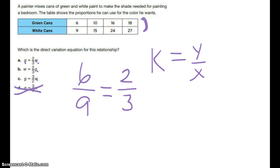So now, I have to look. Let's start with A. G equals 2 thirds of W. Do the green cans, to get the green cans, are those 2 thirds of the white cans? Are green cans smaller than the number of white cans? Yeah. I think that this potentially could be an answer, but I'm going to come back to it.